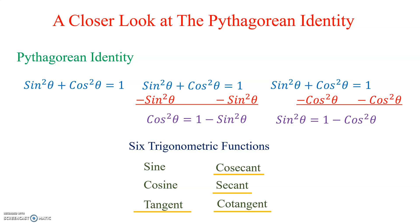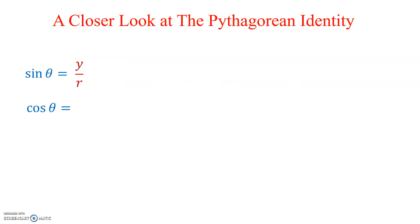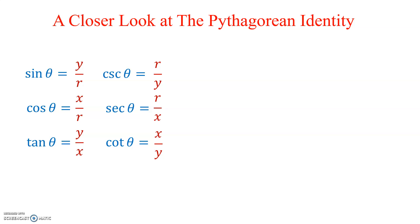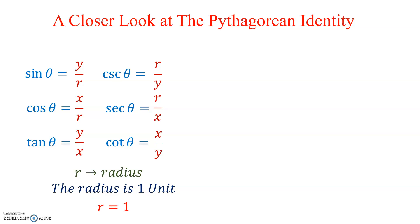We're looking to create other versions that will include these other four trigonometric functions. We learned earlier that all six of our trig functions could be written in terms of X and Y. We also learned that R in all of these represents the radius, and the radius in the unit circle was exactly one unit. So R in all of these expressions equals one.